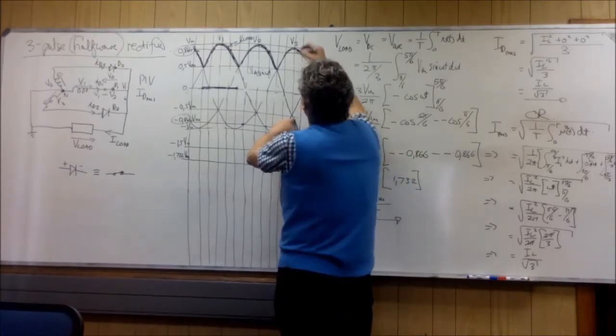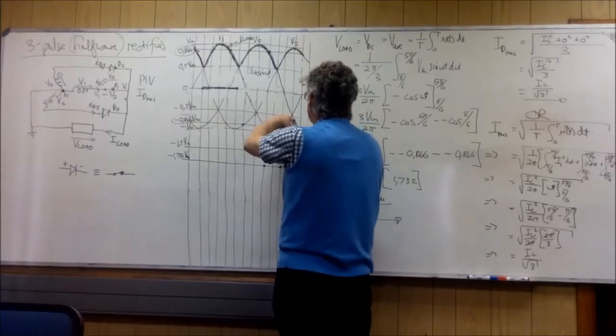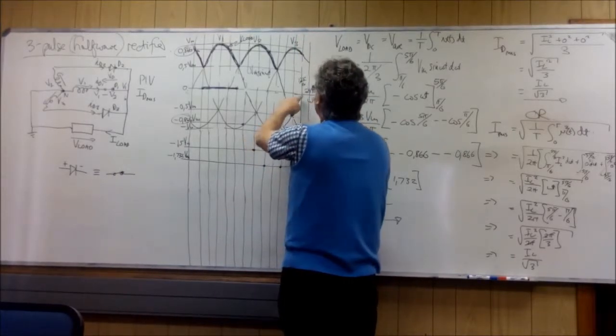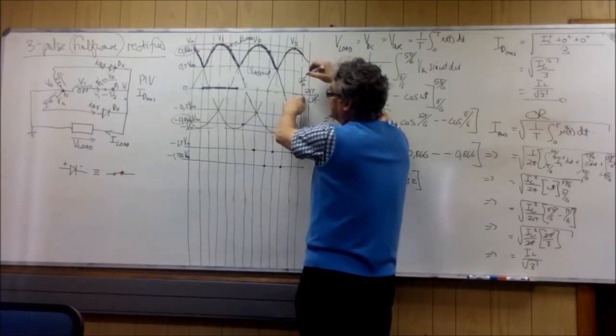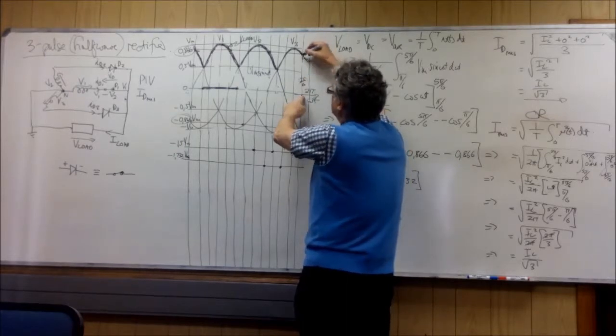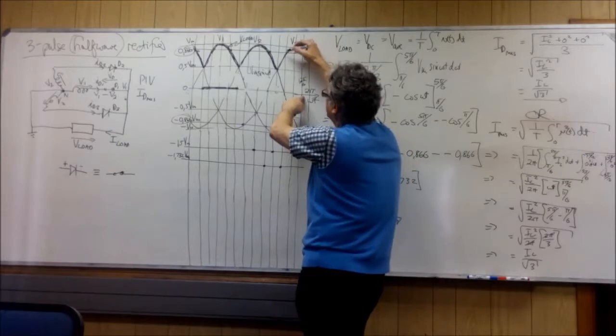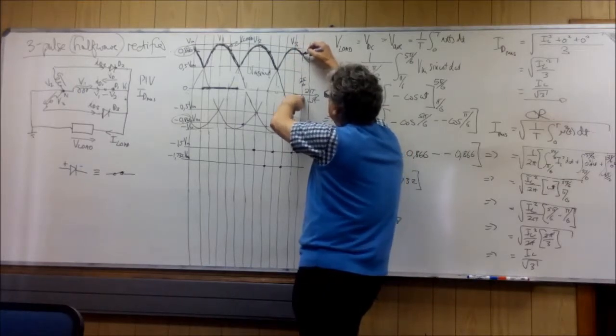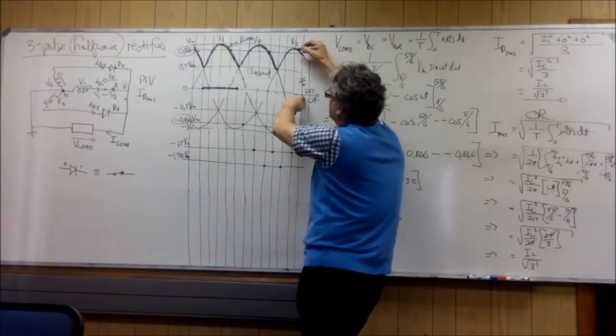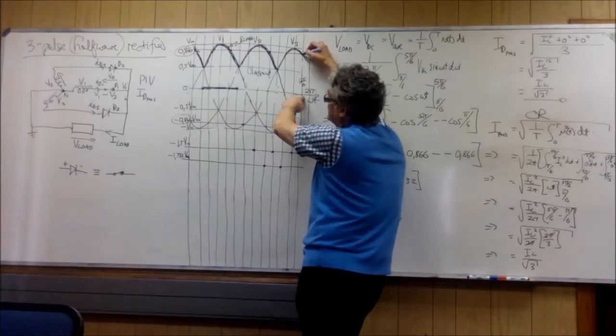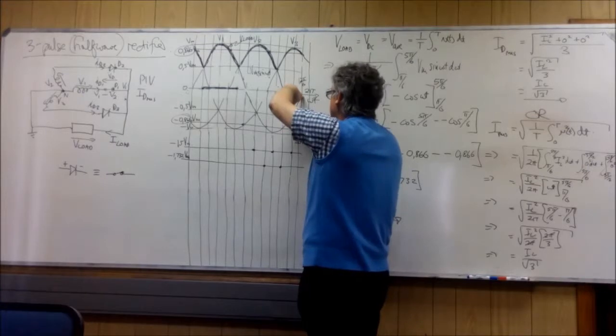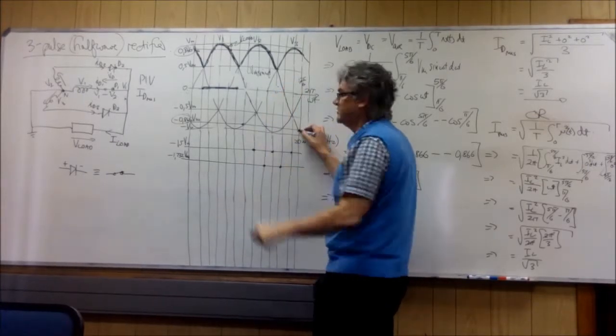V1 is minus 0.5 minus 1 gives me minus 1.5. V1 is 0, V3 is 0.866. V3 is now the load voltage, okay? 0.866, so 0 minus 0.866 gives me minus 0.866.